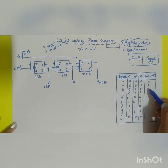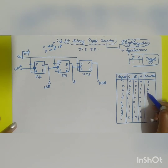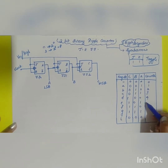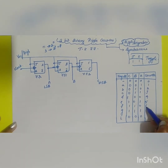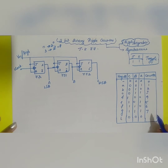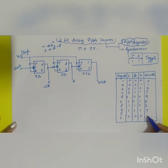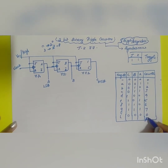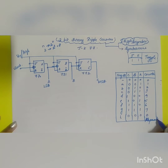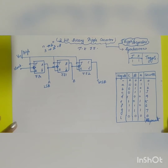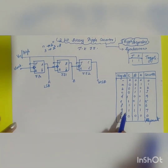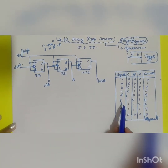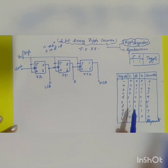The counter counts from 0, 1, 2, 3, 4, 5, 6, 7, and then it goes back to 0 and repeats again. This is the truth table of the 3-bit binary ripple counter.